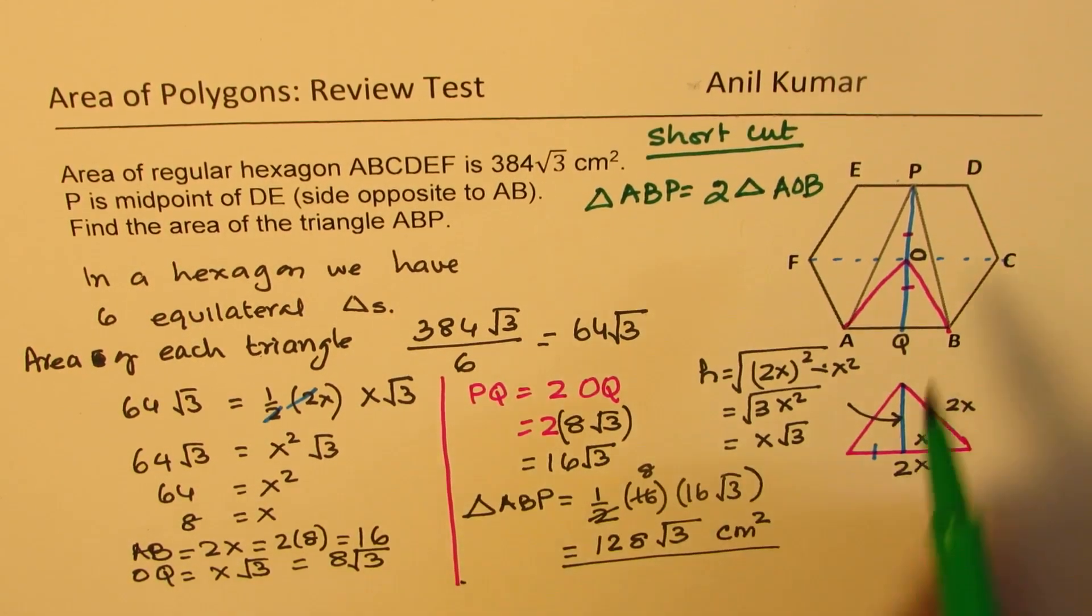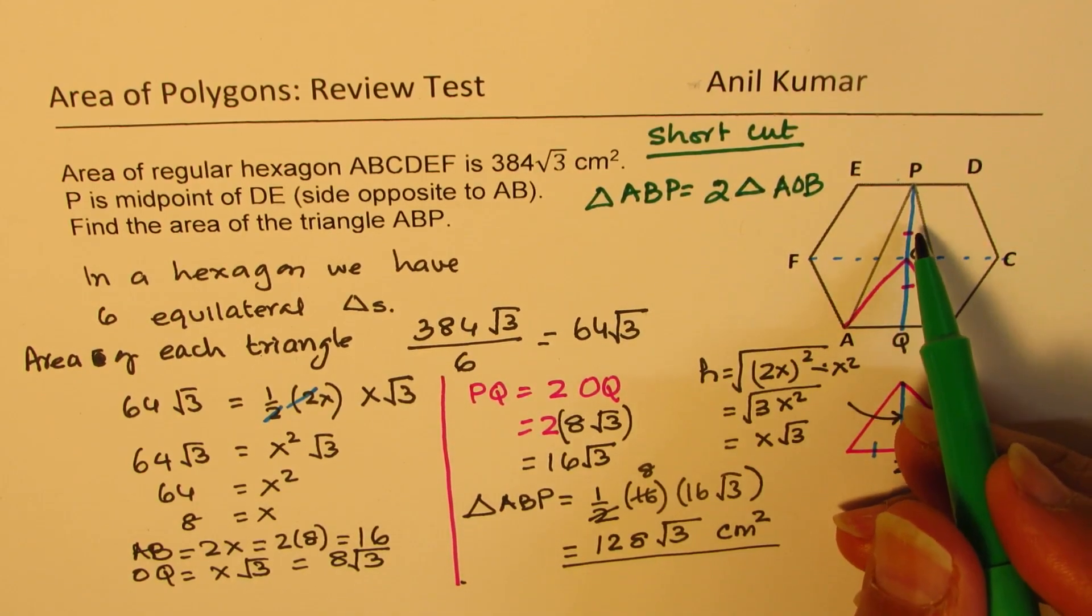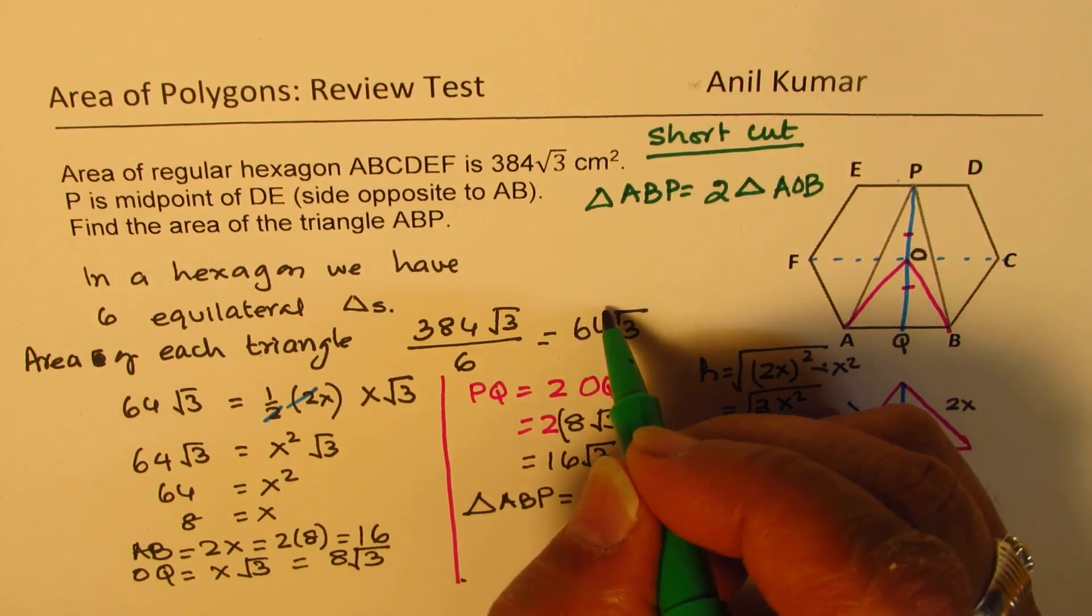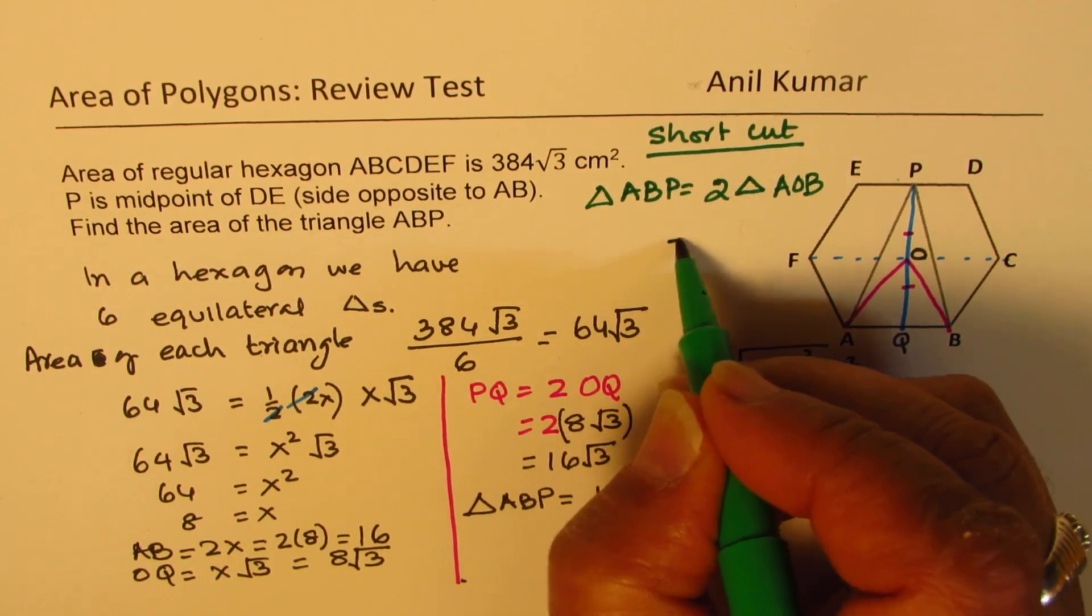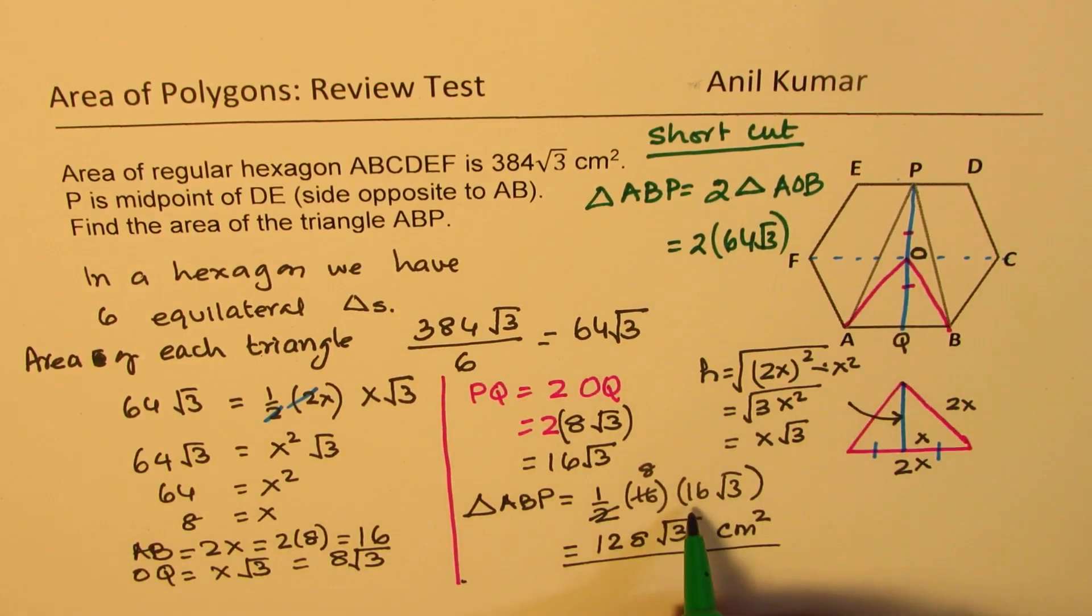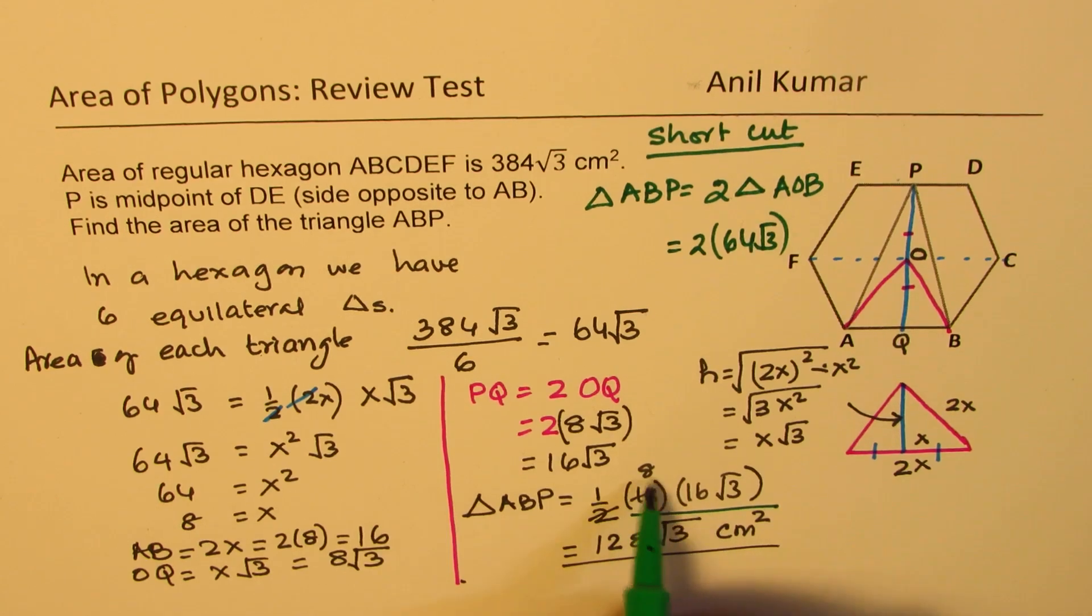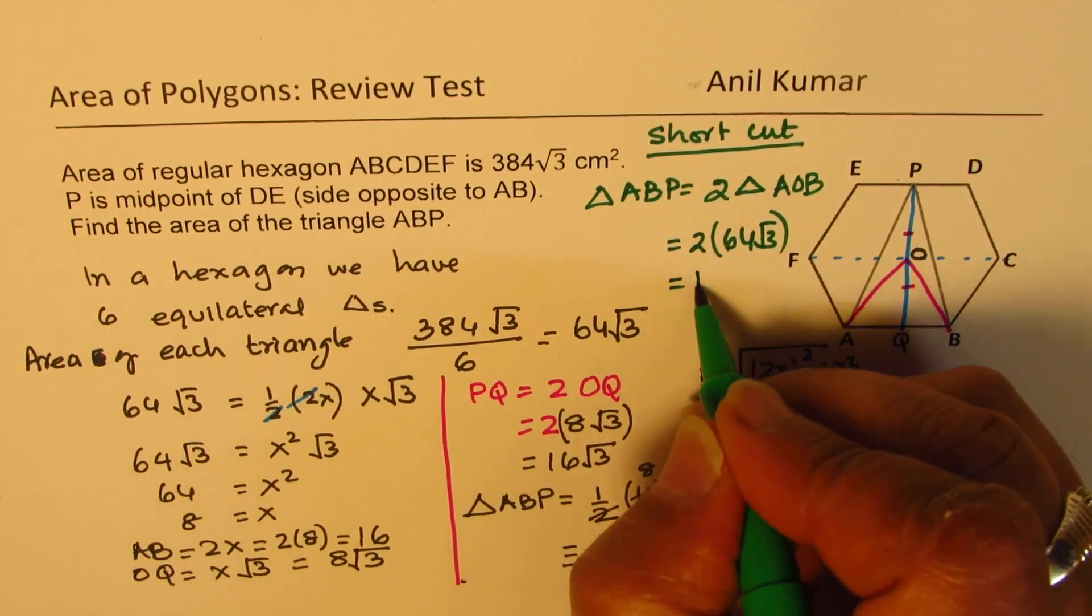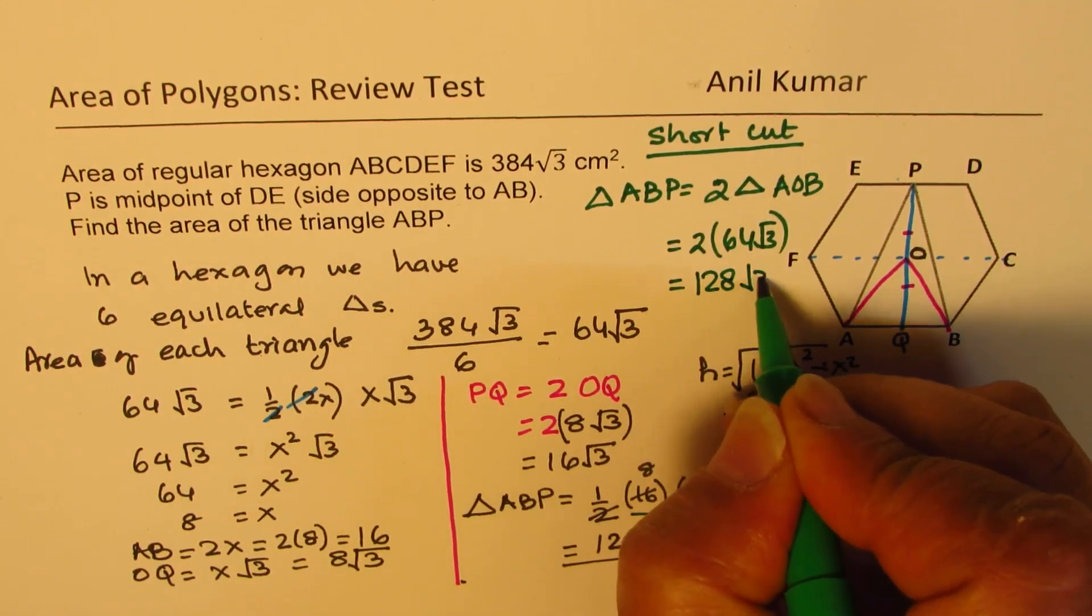That is the shortcut, just twice this area. We found that each area is 64√3, so you could check from here. If I write 2 times 64√3, that is what we had here. 8 times 8 is 64 times 2. So we get the same value, which is 128√3.